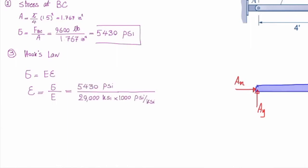So stress is 5430 psi. And the modulus of elasticity is 29,000 ksi. And I will multiply that by 1,000 to convert that into psi. And that gives me the value of strain, which is very small. And that is equal to 0.000187 inch over inch.